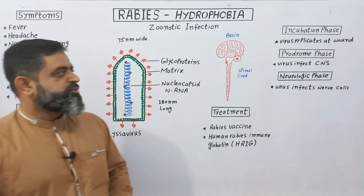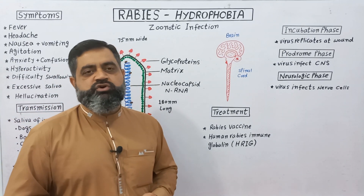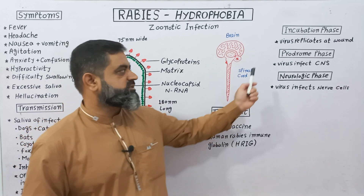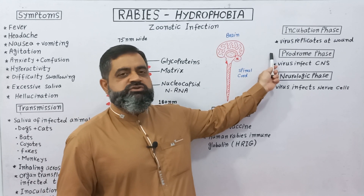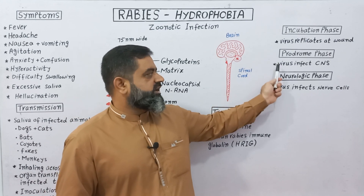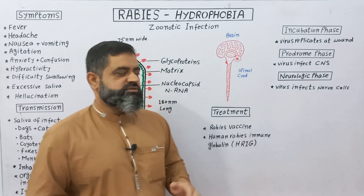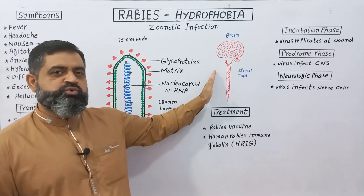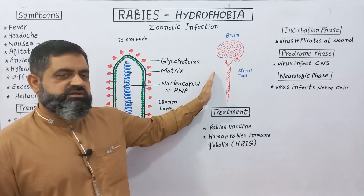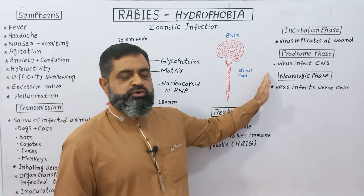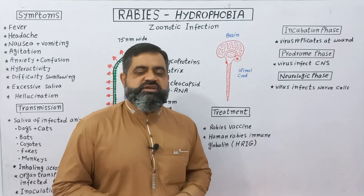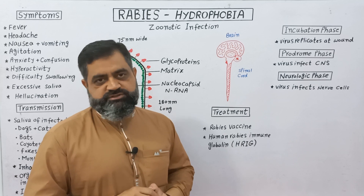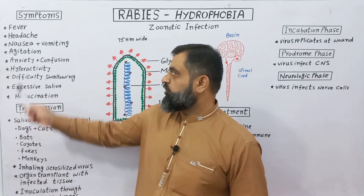The next stage is the prodrome phase, which is the early stage of symptoms of rabies. The virus starts to infect the central nervous system, including the brain and spinal cord, and this phase can last 2 to 10 days. The final stage is the neurologic phase, in which the virus attacks the cells of the nervous system and causes the symptoms already mentioned.